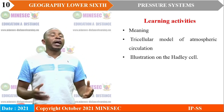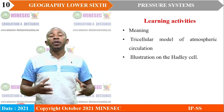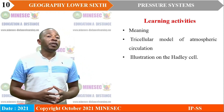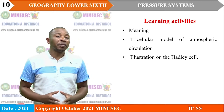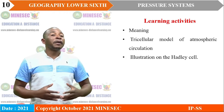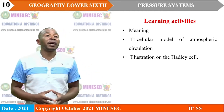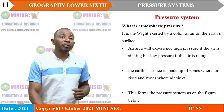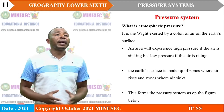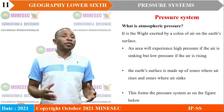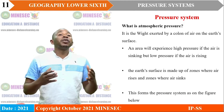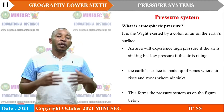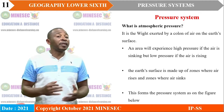Under learning activities, this lesson will center on the meaning and illustrations of the tricellular model of atmospheric circulation. We first have to understand what atmospheric pressure is. Atmospheric pressure is simply the weight of the air, or the weight exerted by a column of air on the Earth's surface.